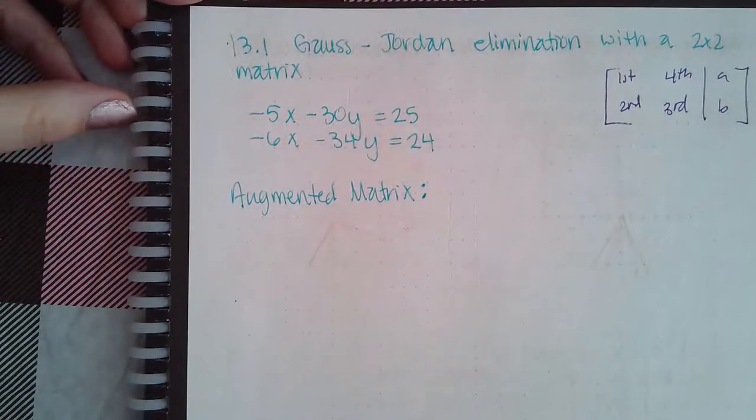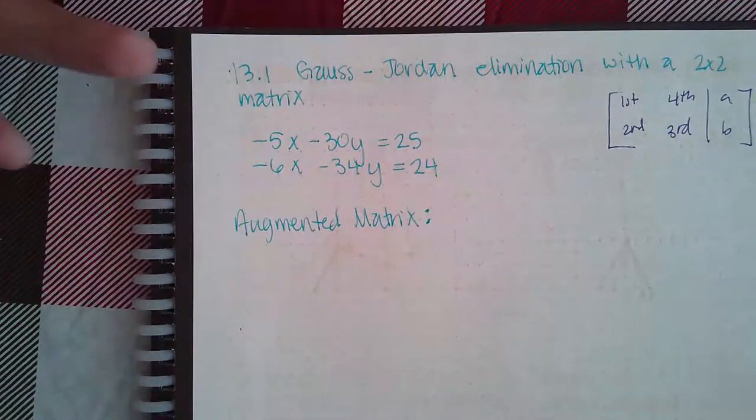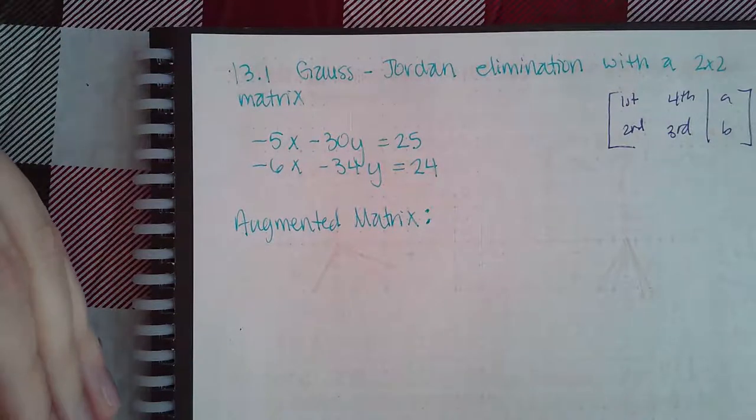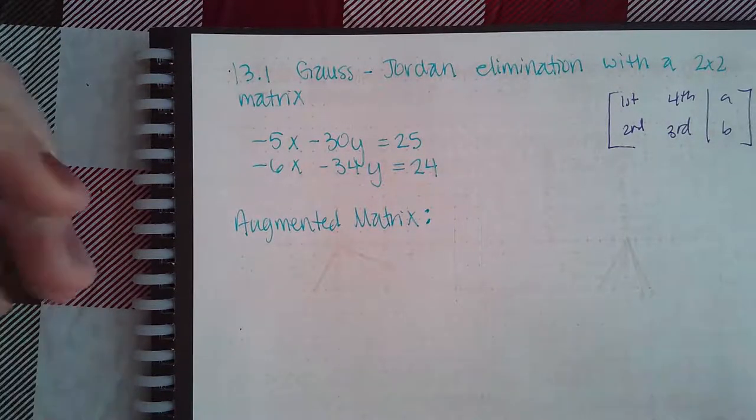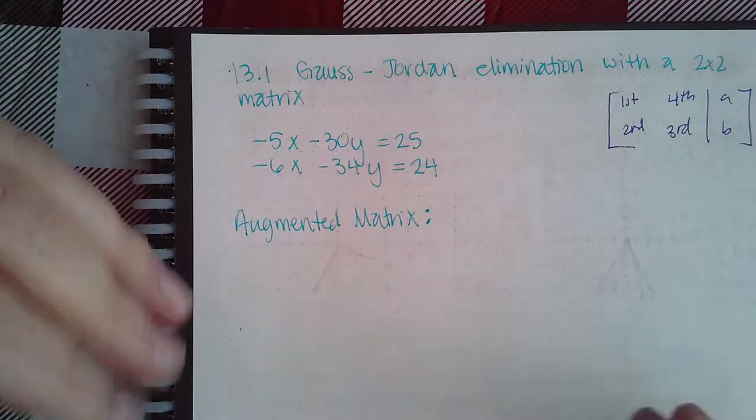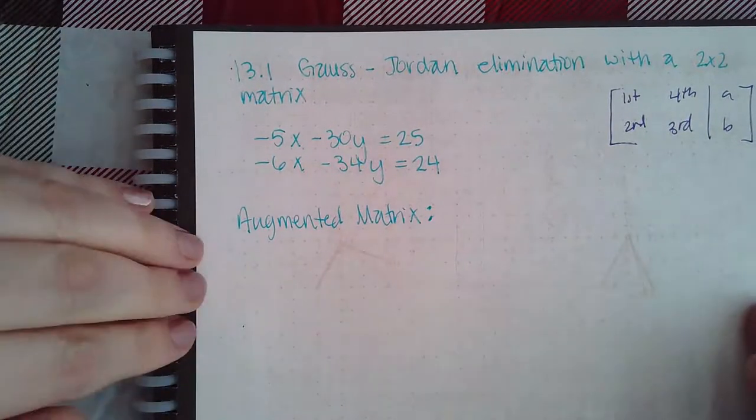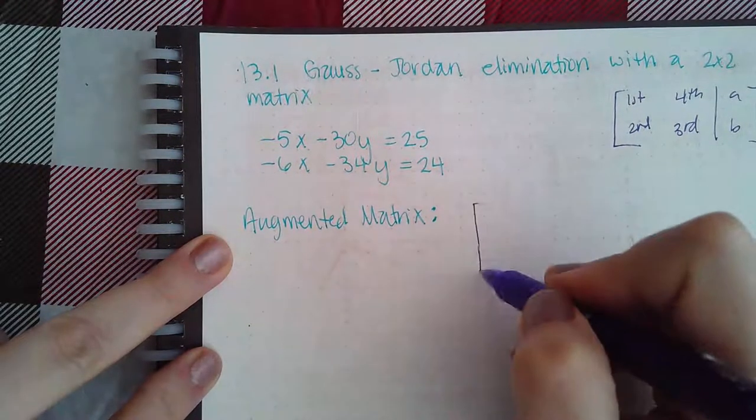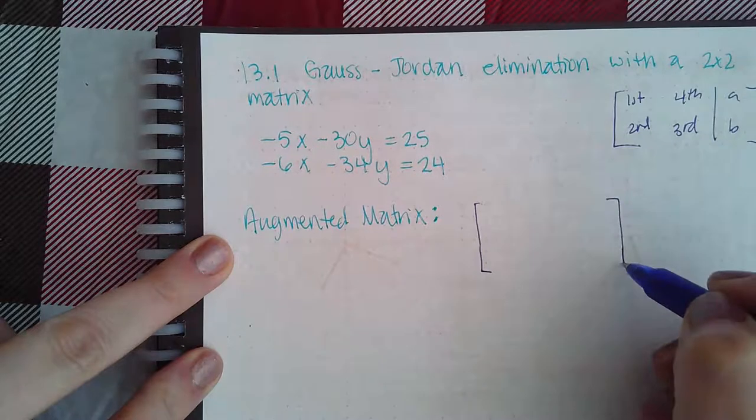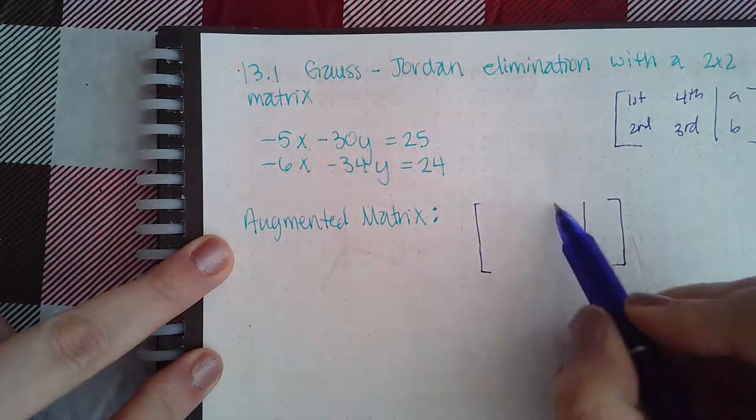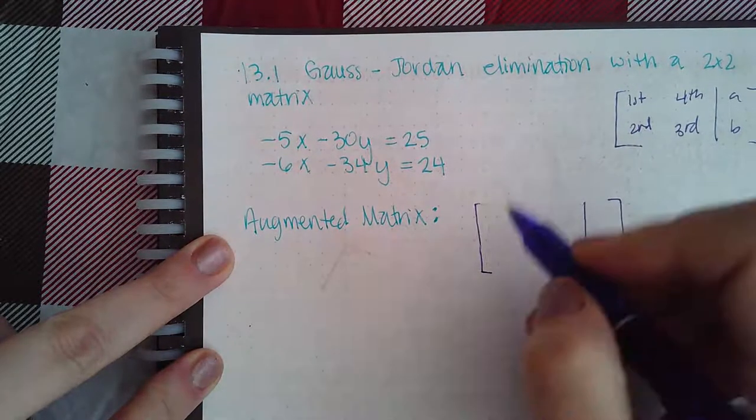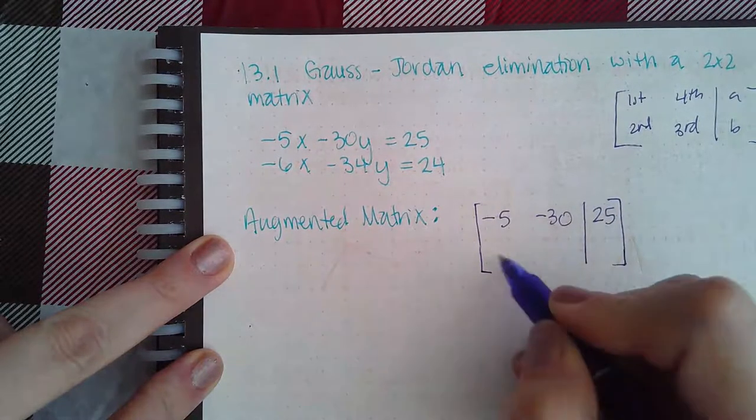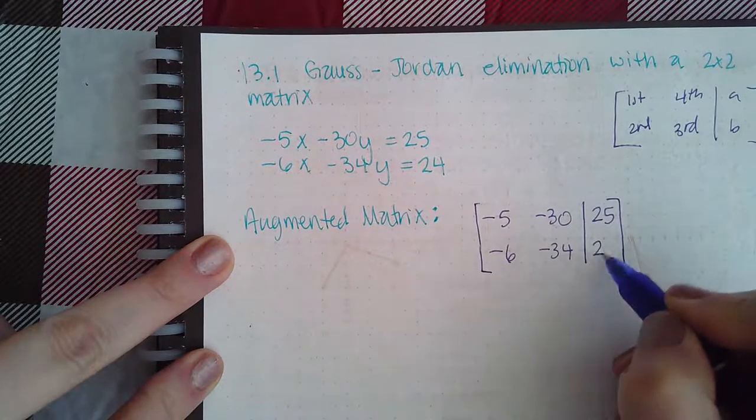Now, here, we have to do it ourselves. So, they are going to either walk you through everything or they'll just ask you for the final answer. But we must show all these steps. So, first is the augmented matrix. Now, that means I'm going to write equation one as my line one, and I'm going to do the coefficients of x, coefficients of y, and then the constants. So, this becomes negative 5, negative 30, and 25, negative 6, negative 34, and 24.